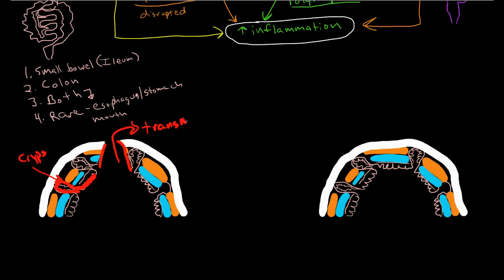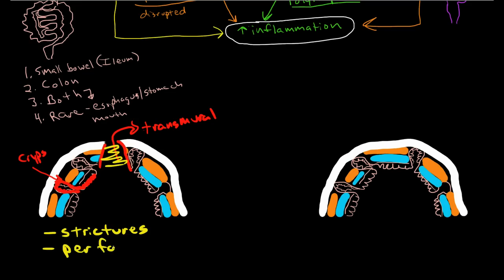Because Crohn's disease can be transmural, it can cause some very serious problems, including significant scar tissue and fibrosis forming through various layers of the colon. This can lead to strictures and perforations. These things do not often occur with ulcerative colitis.